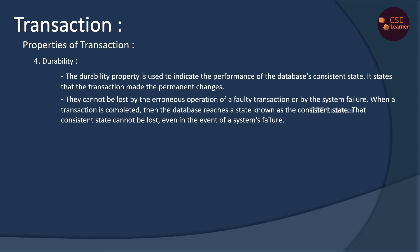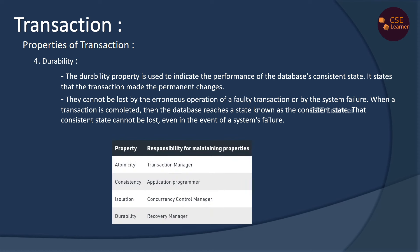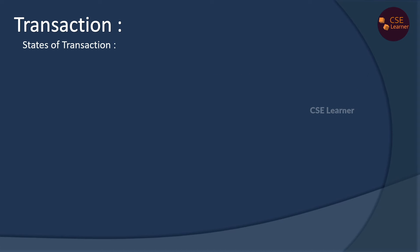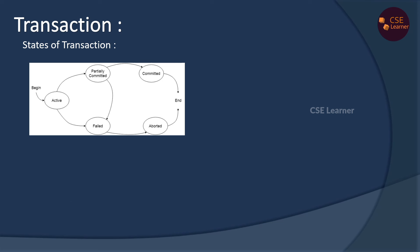In the transaction properties, there are managing components: the Transaction Manager handles Atomicity, the Application Program handles Consistency, the Concurrency Control Manager handles Isolation, and the Recovery Manager handles Durability.